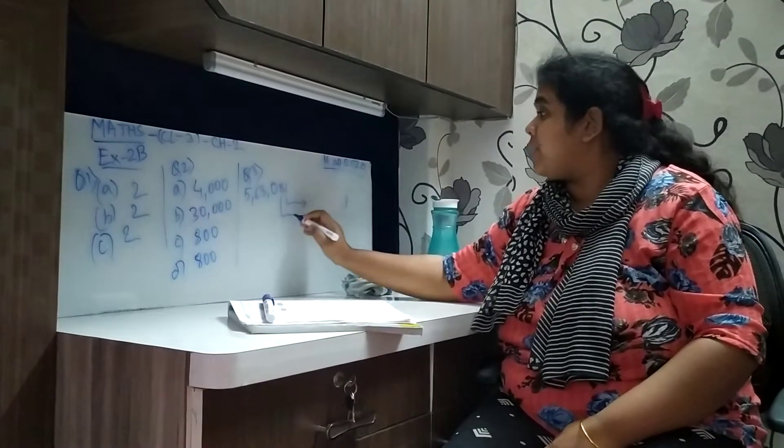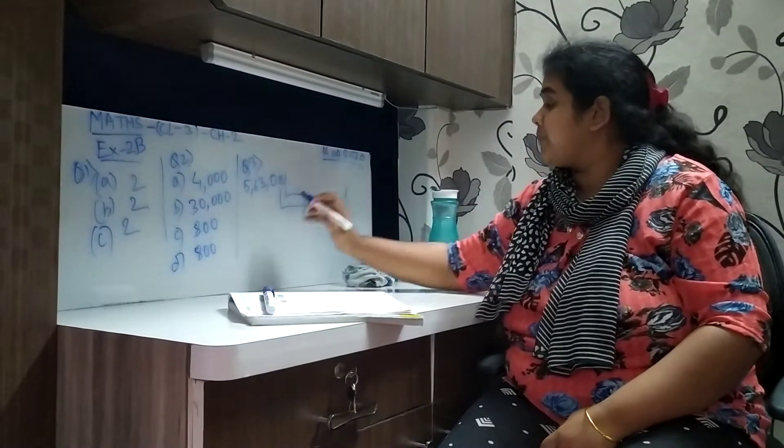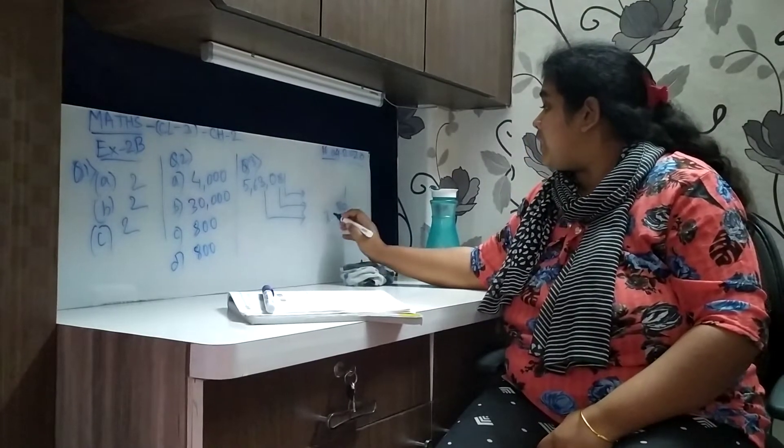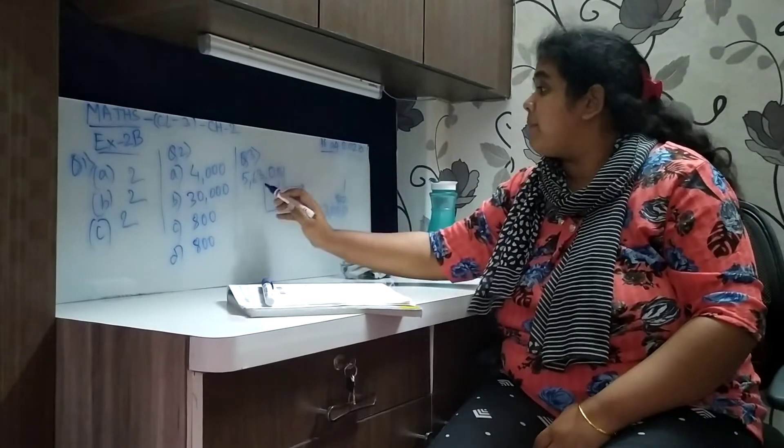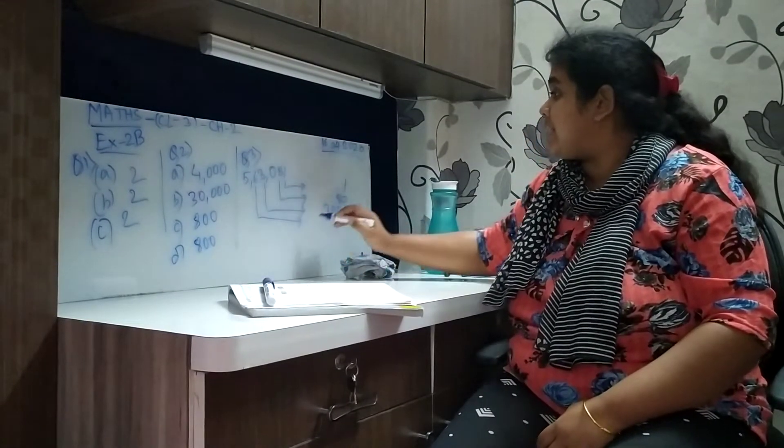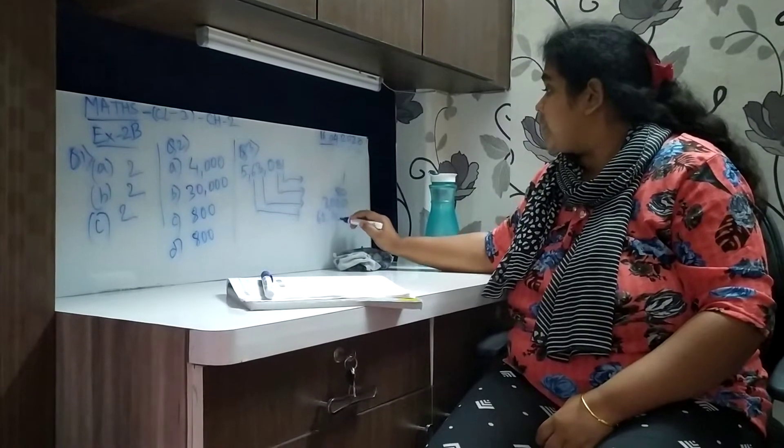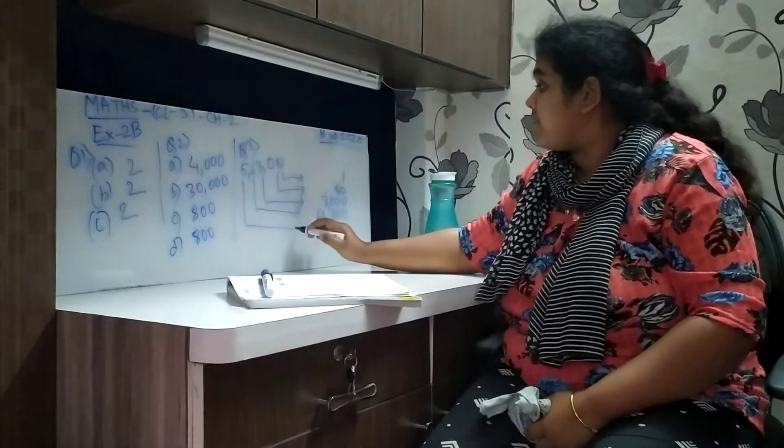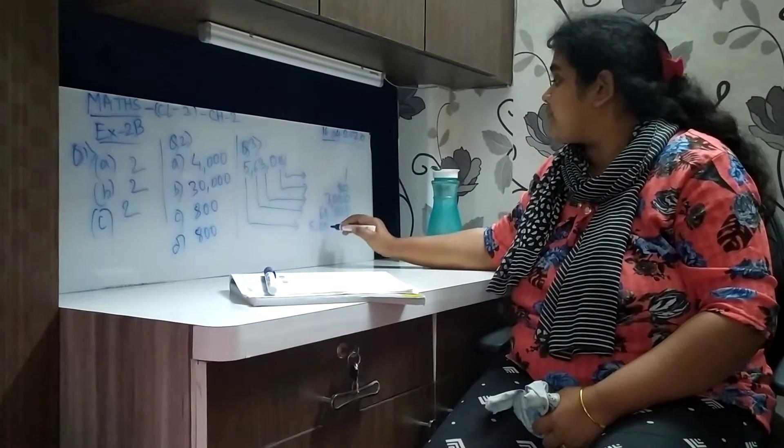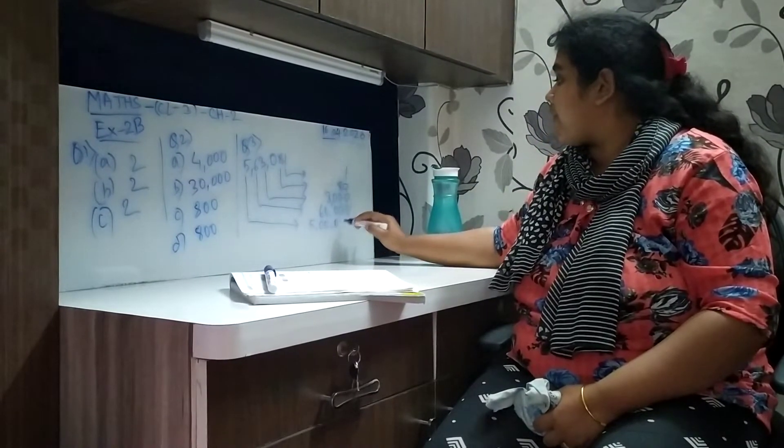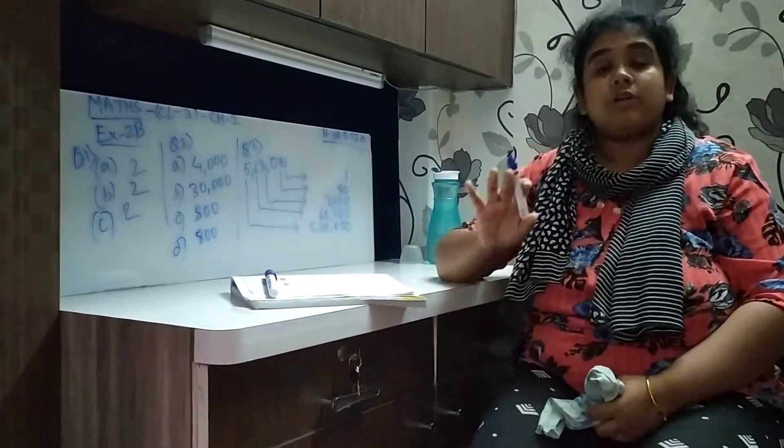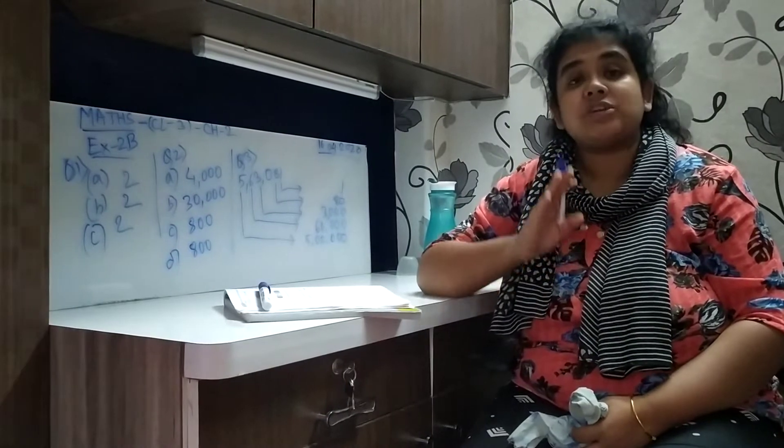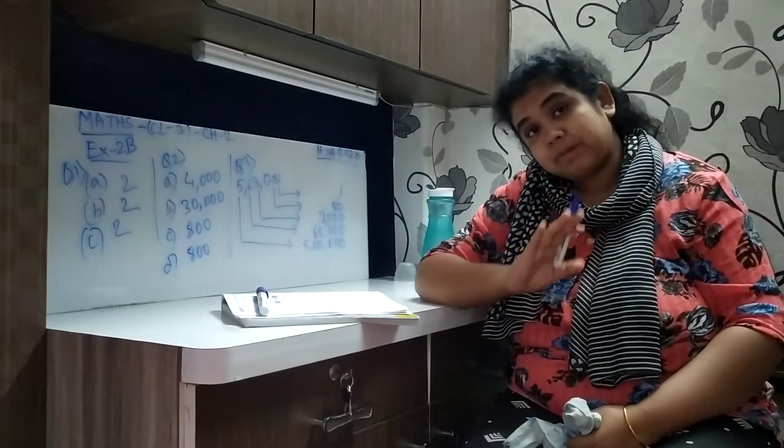Place value of 8 is 80. Place value of 3 is 3000. Place value of 6 is 60,000. In this way, we will do this sum. Simply, we will write the face value of each and every number. I think the sum is clear.